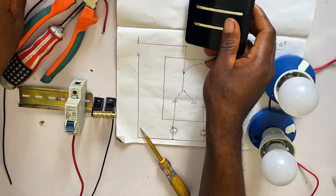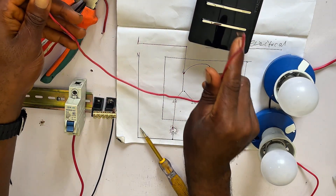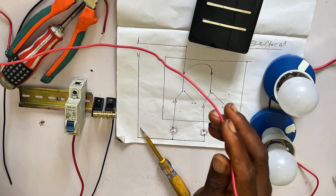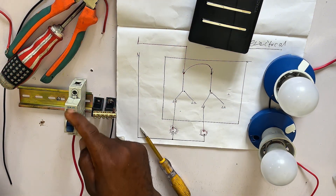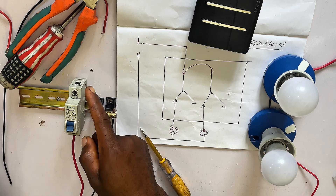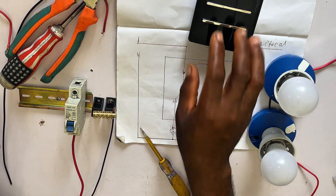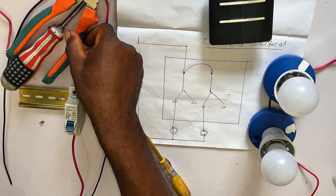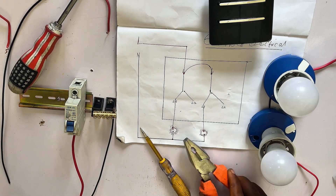First I'll take a red wire — this red wire I'm going to connect from my breaker, that is the live wire from my breaker, to the L terminal of the first gang.